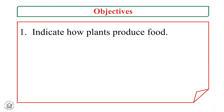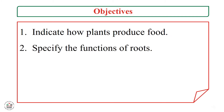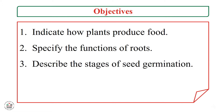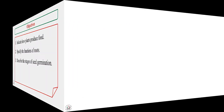Our objectives today are: the first one is to indicate how plants produce food, the second one is to specify the functions of roots, and the last one is to describe the stages of seed germination.